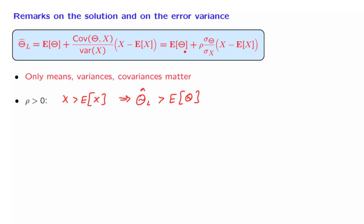Of course, there's an analogous story. If rho was negative, then the same argument would apply, except that it would work in the opposite direction. When rho is negative, if we see a large x, then we will come up with a low estimate for theta.